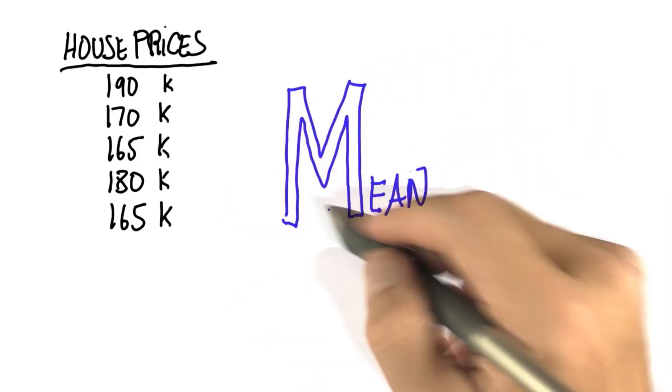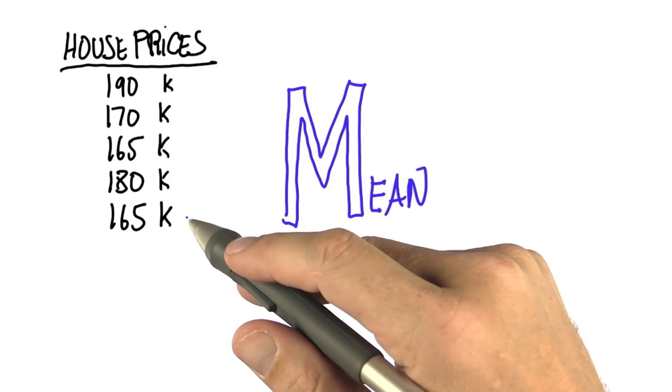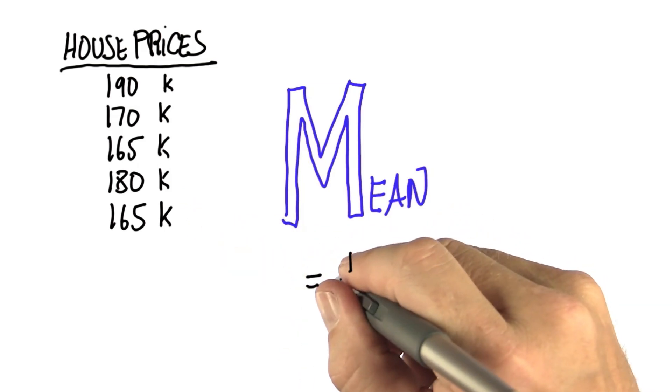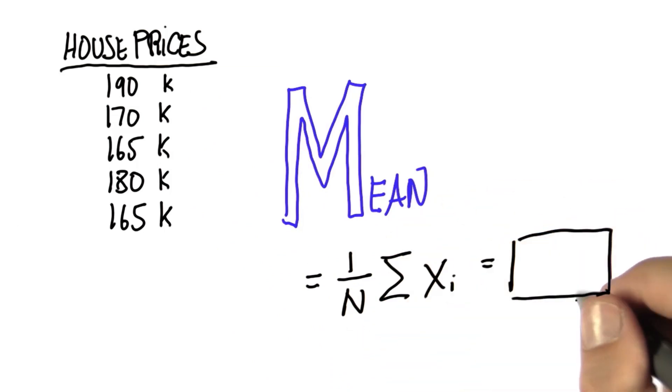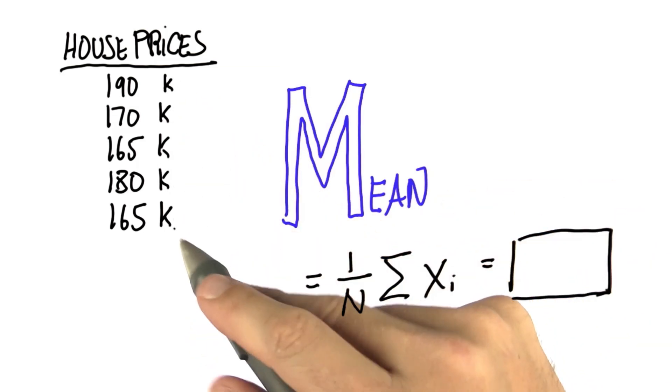The mean is using the exact same formula as in the previous unit. It's the average of all those prices over here. Do me a favor and quickly compute it for those numbers over here.